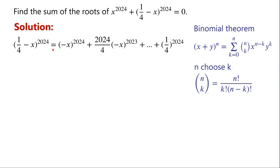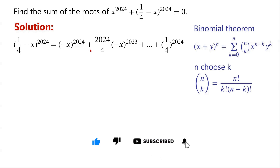By applying the binomial theorem, we can write the expansion of (1/4 minus x) to the power of 2024. The first term has coefficient 1 when k equals 0, so n choose 0 equals 1, giving us 1, plus 2024 over 4 times (minus x) to the power of 2023.